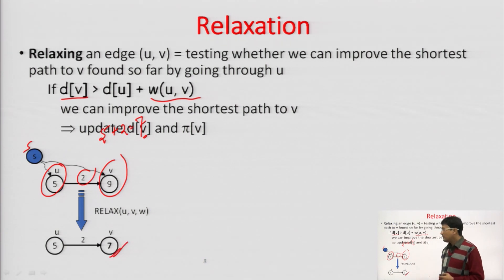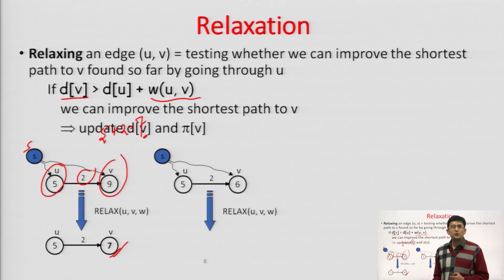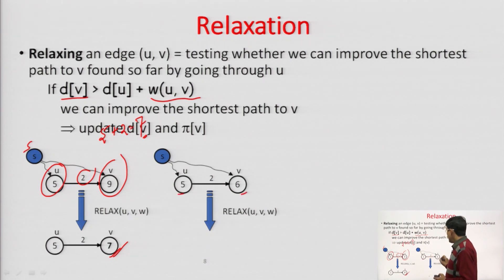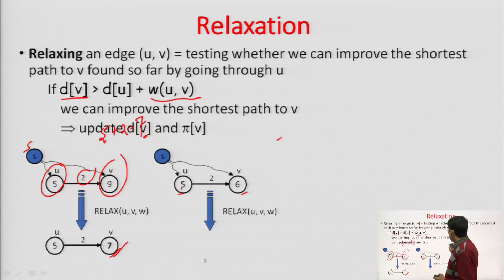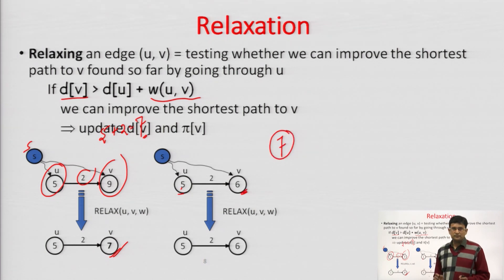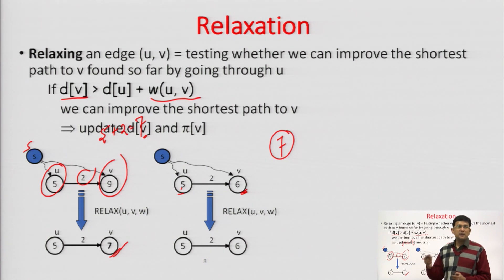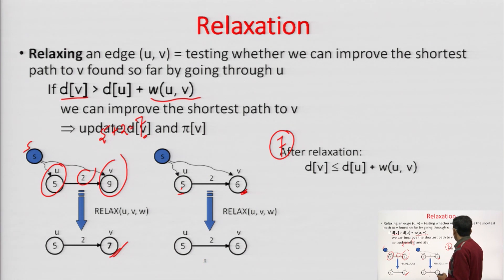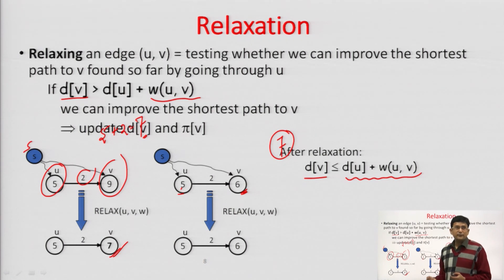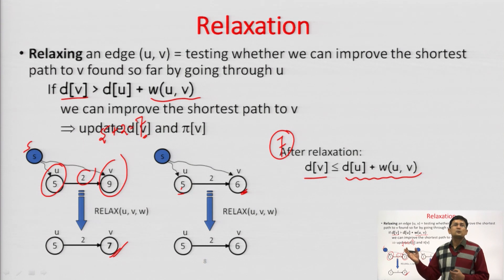So now, you have updated vertex V's distance as 7. There may be situations wherein updates are not required — for example, if the distance of U from source is 5, distance of V from source is 6, and the cost of the edge is 2. If you sum 5 and 2 for reaching V through U, the cost becomes 7, but the cost is already 6, so we do not need this update. Updation will be done only when we find a better, minimum value. After relaxation, d(V) will be less than or equal to d(U) plus w(u,v).